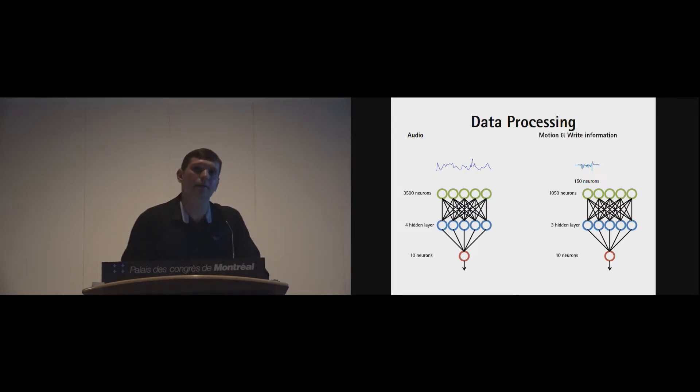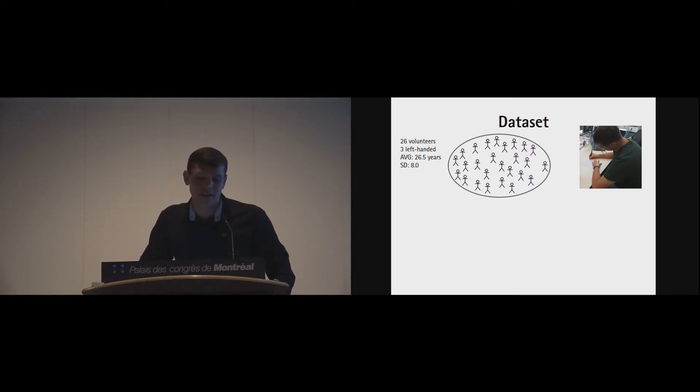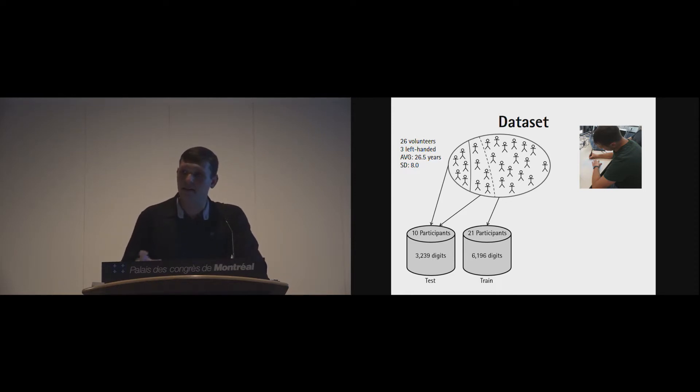We had to evaluate our approach. We conducted a user study with 26 volunteers, where three were left-handed. We took 21 of them, who gave around 6,000 samples, and then trained our networks. To evaluate our approach, we used five completely new people and five who conducted the study twice on another day to give samples for the test set, just to see if the writings are known, would the neural networks perform better.